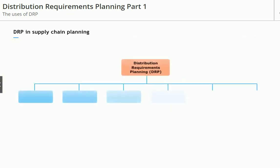DRP does six things. The first use is that it communicates demand. What do you mean by it communicates demand?